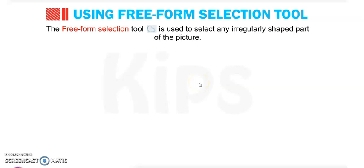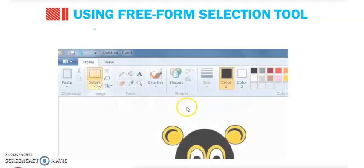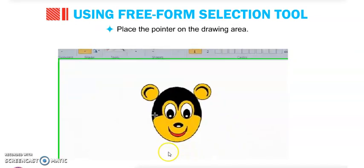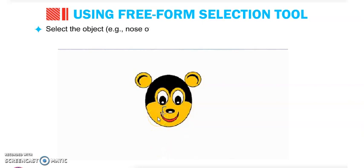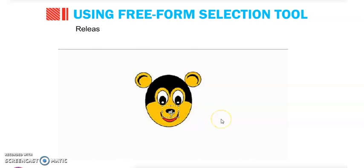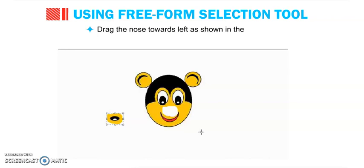Next tool is the Free Form Selection tool. It is used to select any irregularly shaped part of the picture. We can drag the selected portion and place it on another location. Select the Free Form Selection tool, place the pointer on the drawing area, and select the object — for example, the nose of Mickey Mouse — by holding down the left mouse button and moving the pointer around the outer boundary. Release the mouse button after selecting, then drag the nose towards the left as shown.